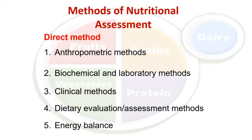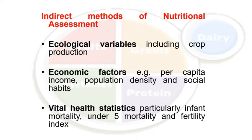The indirect method does not directly assess nutritional status, but uses community health indicators that reflect nutritional influences. Examples include ecological variables such as crop production, soil fertility, food import and export, and staples production; economic factors like per capita income, population density, and social habits; and vital health statistics, particularly infant mortality, under-five mortality, fertility index, neonatal mortality, and maternal mortality.